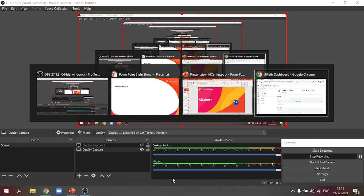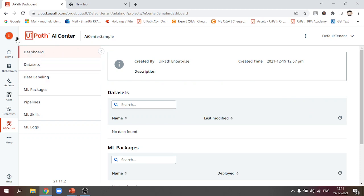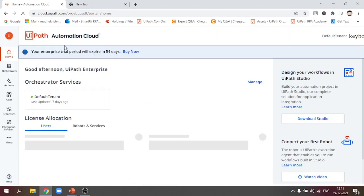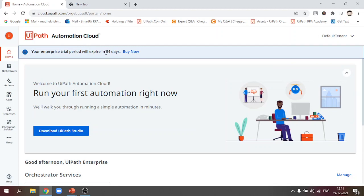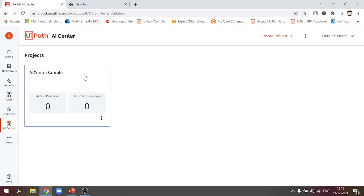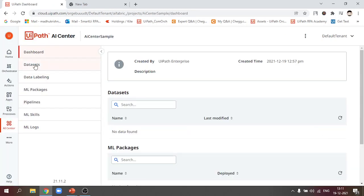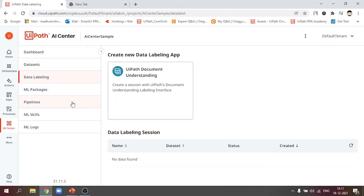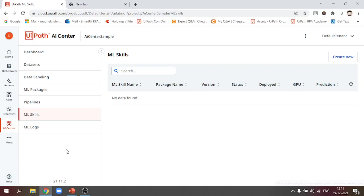What's next? In the coming sessions, we'll be discussing how to enable AI Center for our Orchestrator, how to create an account, how to ask for enterprise edition. For AI Center, we need to enable enterprise edition. For trial period, we'll get 54 days. How do we enable that? How do we create a project for AI Center? What are these dashboards, data sets, data labeling, ML packages, pipelines, ML skills? How do we make use of these ML skills in UiPath? All those discussions will be in coming sessions. Until then, have a nice day, thank you, and happy automation.